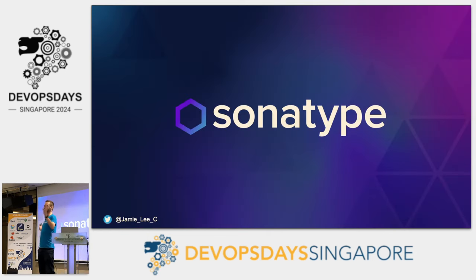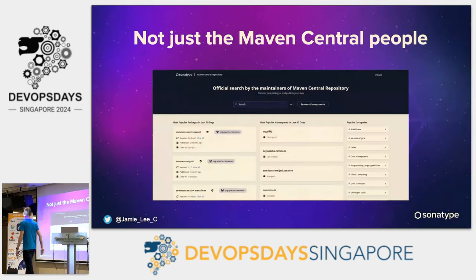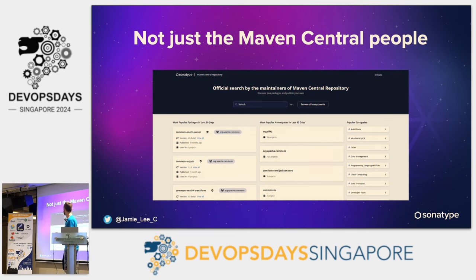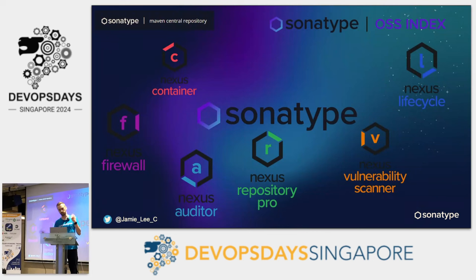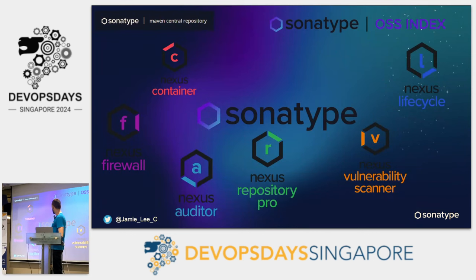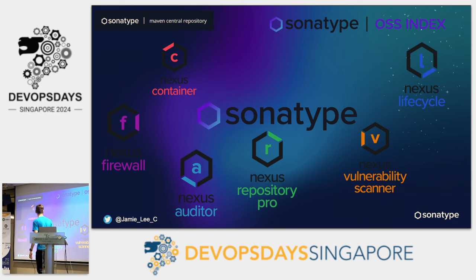Who's heard of Sonatype? A lot of people know us from Maven Central, which is the biggest Java open source repository. That is something we do for the community, but we have lots of other products as well — Repository, Lifecycle, Firewall — and we've actually just released a new product called SBOM Manager yesterday.